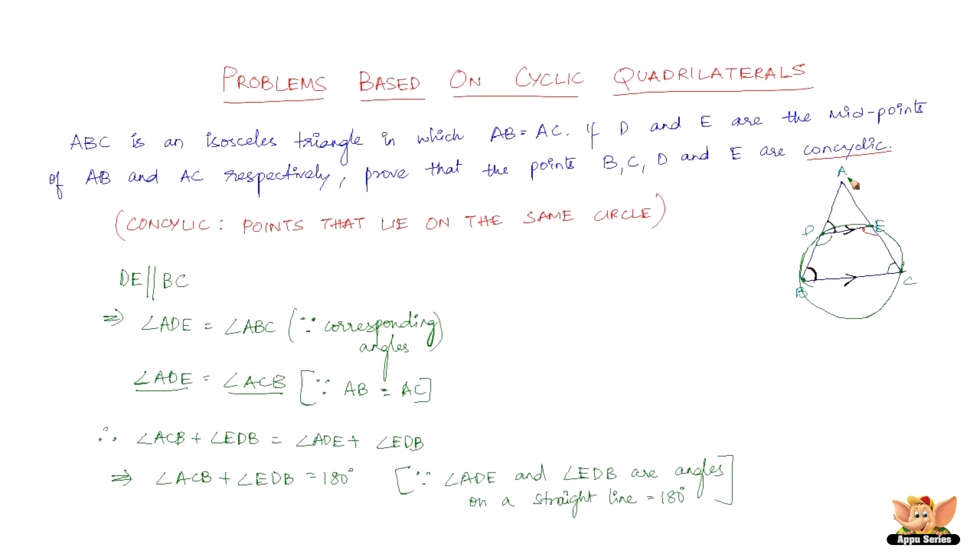The reason being angle ADE and angle EDB are angles on a straight line, these two angles, which equal 180 degrees. When angle ADE plus angle EDB equals angle ACB plus angle EDB, we can substitute this by 180 degrees. So it automatically follows that angle ACB plus angle EDB equals 180 degrees.